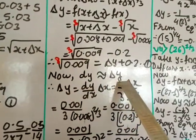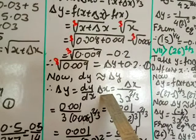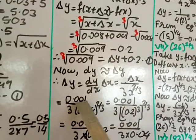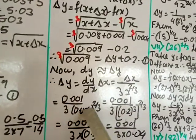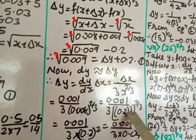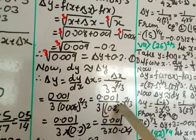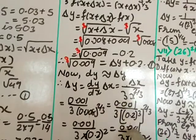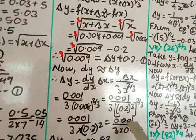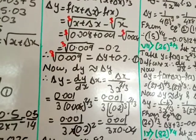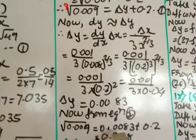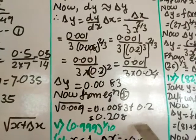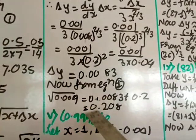Then δy ≈ dy = (dy/dx)·δx = (1/(3x^(2/3))) × 0.001, with x = 0.08. Since 0.2³ = 0.008, the cube cancels and 0.2² = 0.04 remains in the denominator: δy ≈ 0.001/(3 × 0.04) ≈ 0.083. Putting in equation 1: 0.009^(1/3) ≈ 0.083 + 0.2 = 0.208.